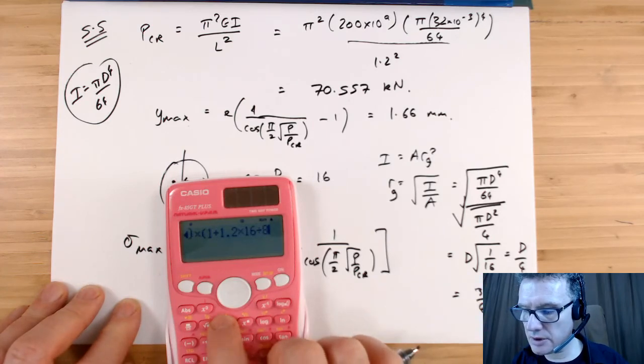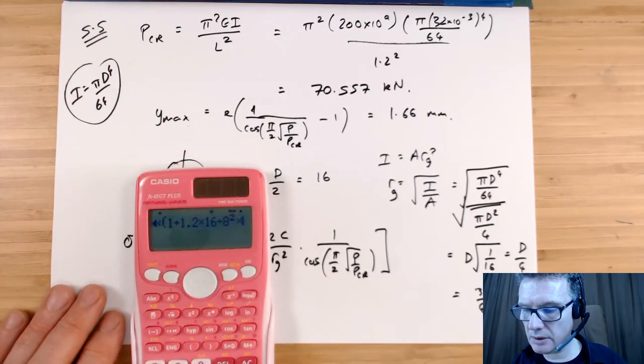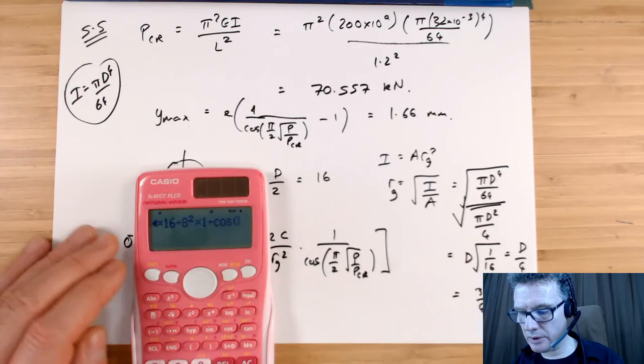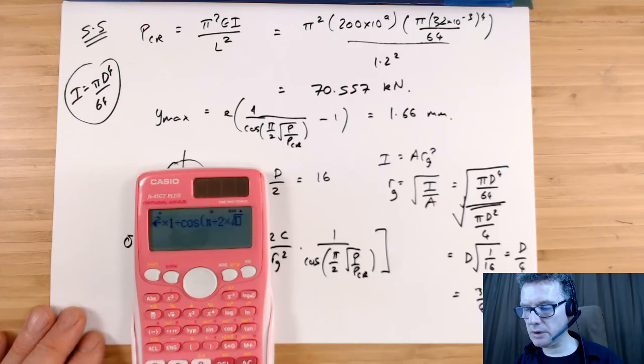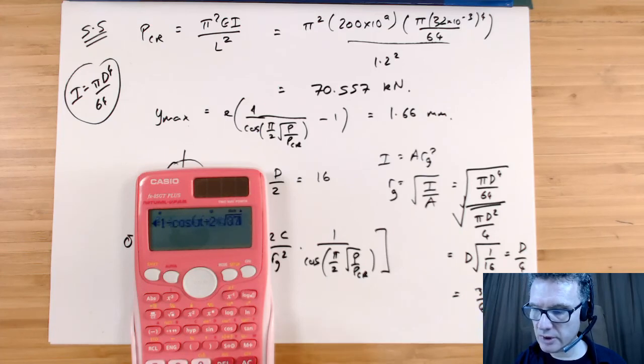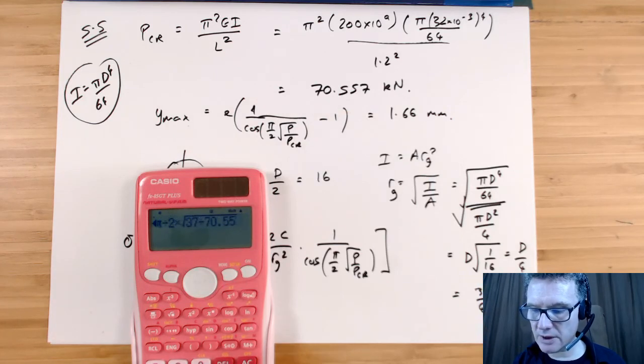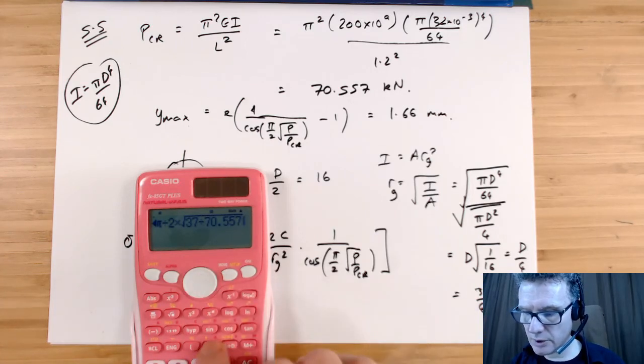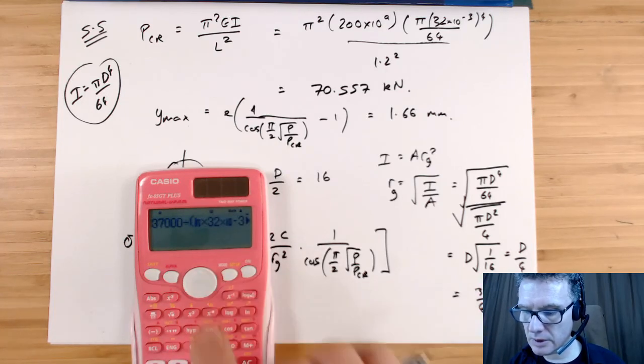Now times this by 1 divided by cos—I'm in radians—π divided by 2 times π—times square root, what's the P value? The P is 37 kilonewtons divided by 70.557 kilonewtons, so those units are fine. Close that bracket, and I think I want to close a bracket, but it should work.